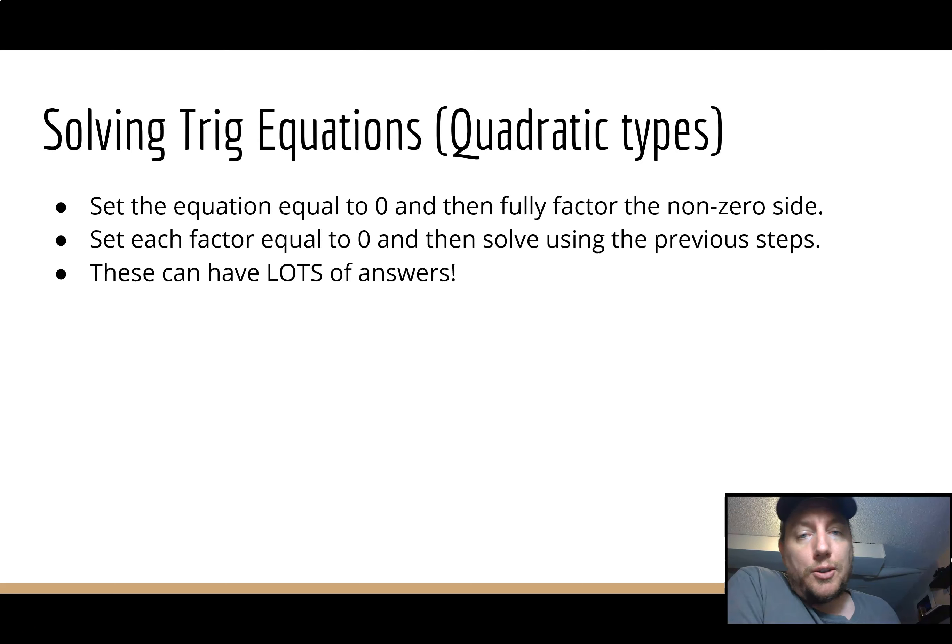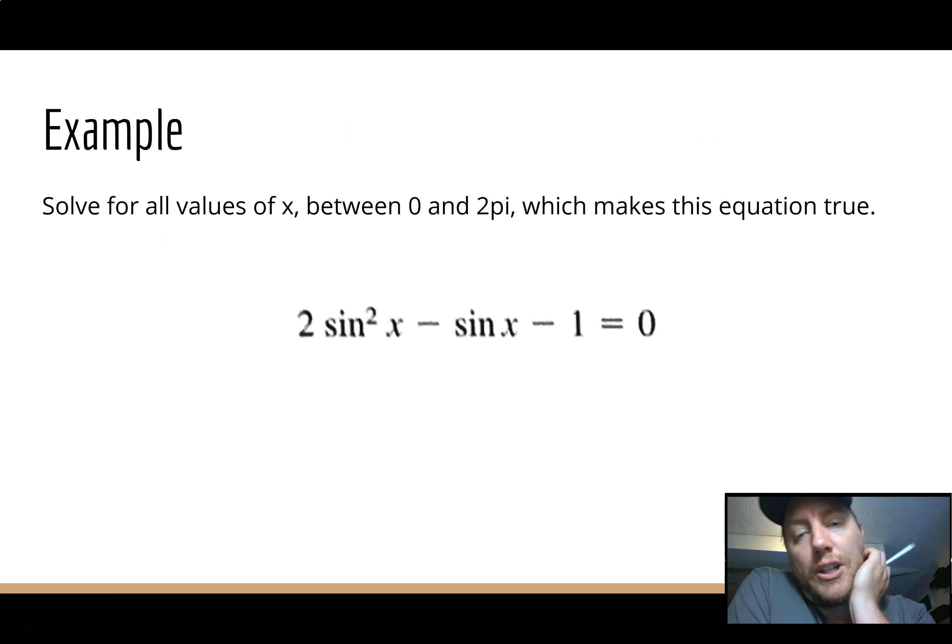So just like you'd normally solve a quadratic, set the equation equal to 0, then fully factor the non-zero side. Set each factor equal to 0, and then solve using the previous steps. So you're essentially creating yourself a couple of problems within one. And these can have lots and lots of answers. So let's just try one. 2sin²x - sin(x) - 1 = 0. Solve for all values of x between 0 and 2π. So I don't like factoring unless it's an x, so I'm going to rewrite it. 2x² - x - 1. And the 2 on the front we can't get rid of. So if I do 2 times -1, -2. Factors that make -1 in the middle: -2, 1.